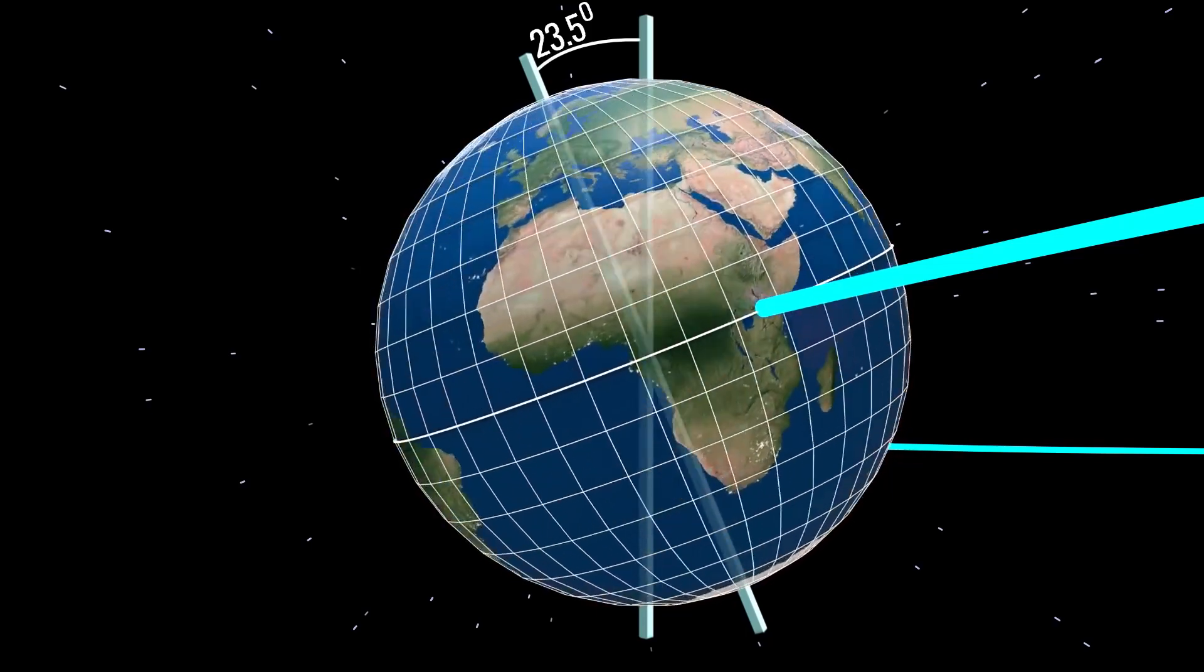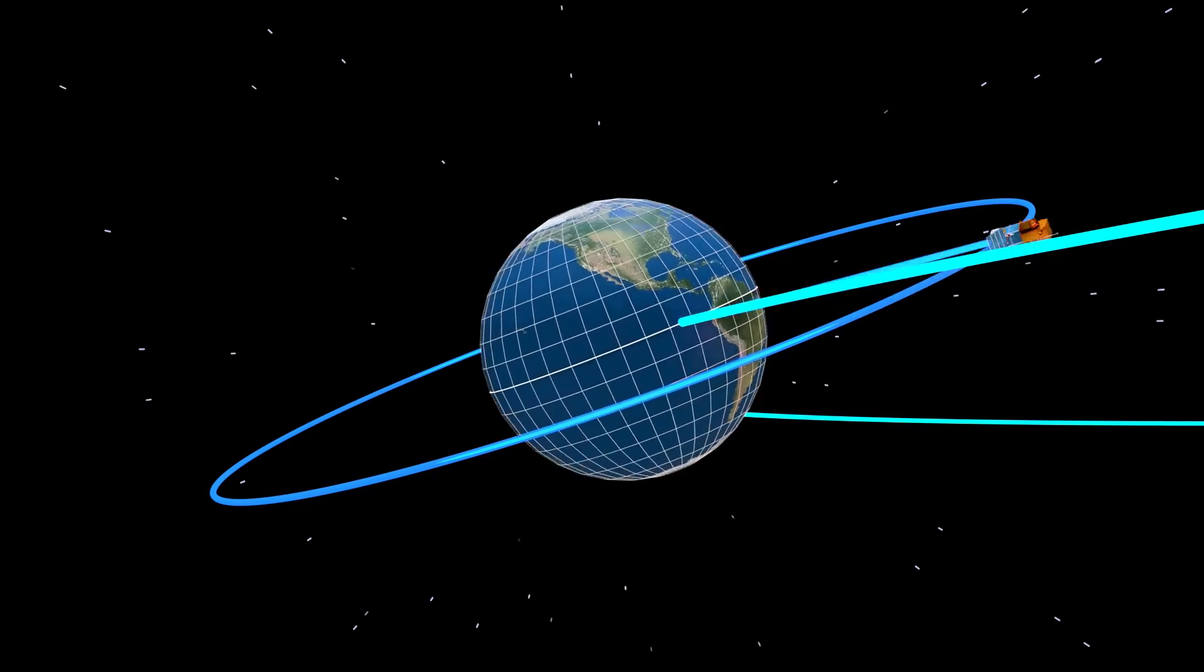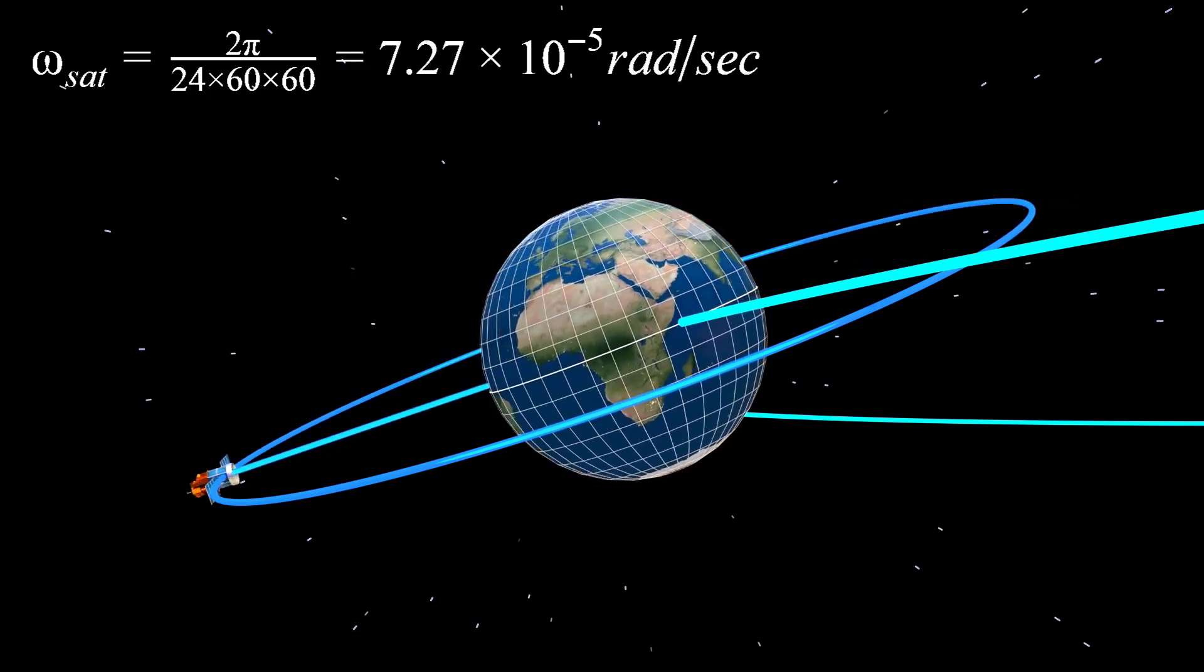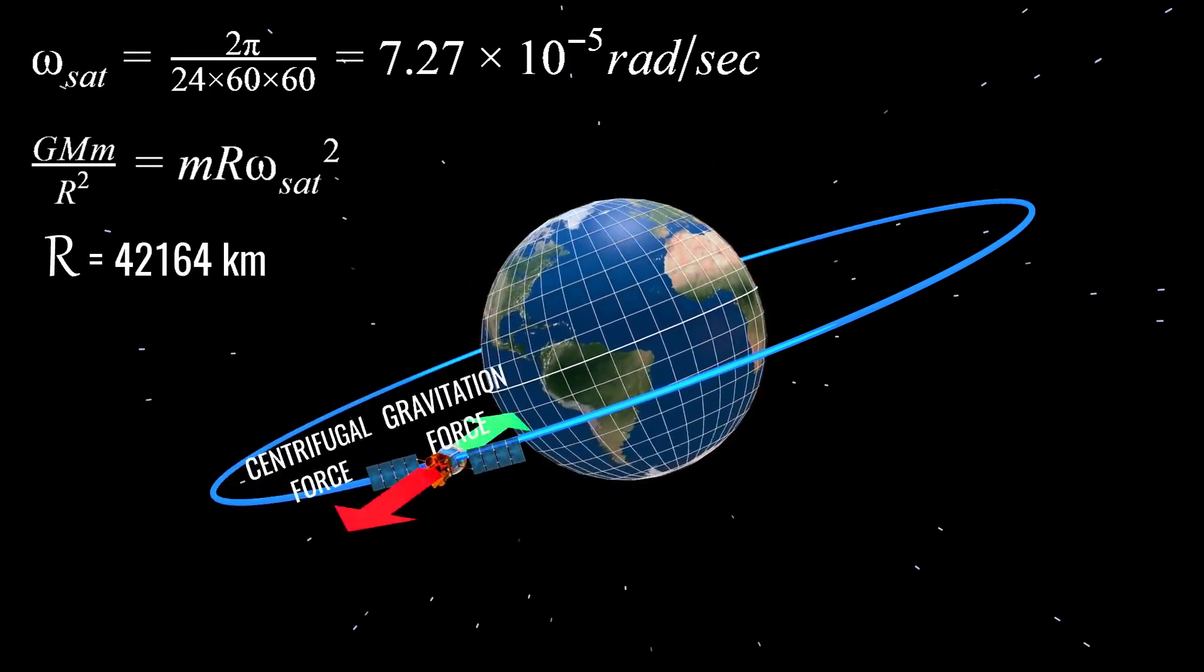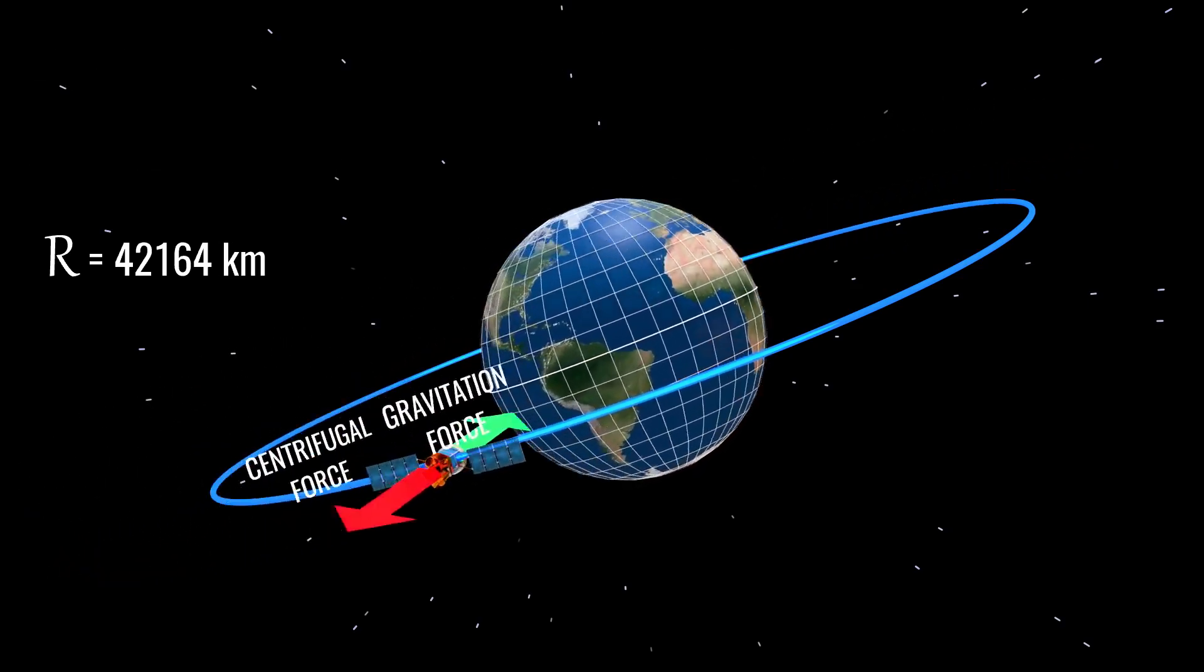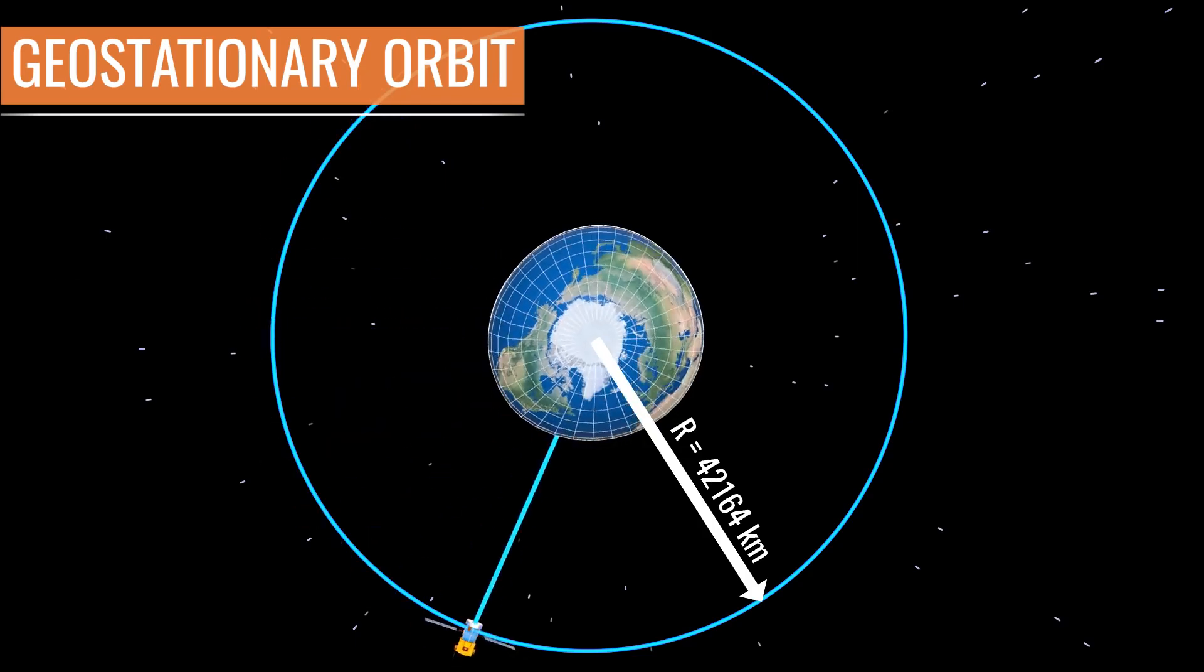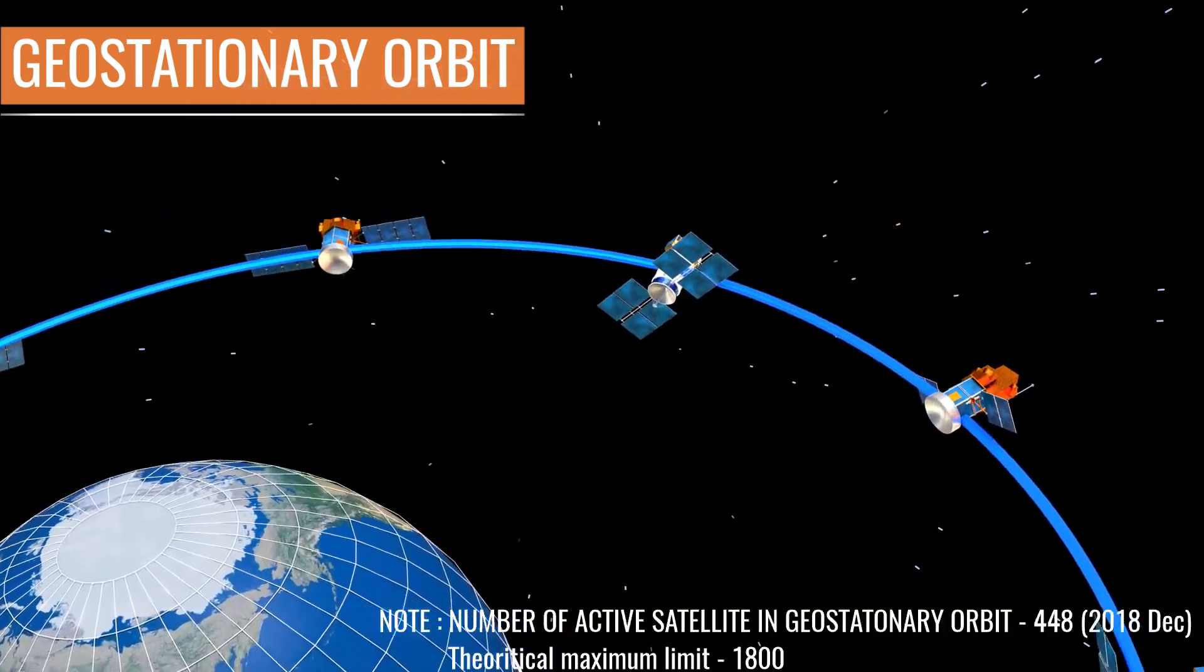For satellite TV to work, the satellite should not move relative to your house. This means that the satellite should rotate at the same speed as that of the Earth, which means it will take 24 hours to complete one cycle. Let's work out the force balance equation of the gravitational and centrifugal forces at this point, using this speed information. You can see that the orbital radius required to achieve the no relative motion condition for the satellite is exactly 42,164 km. This orbit is known as a geostationary orbit. All satellites used for satellite TV purposes should be parked in this orbit. And this visual shows how crowded the geostationary belt has become nowadays.